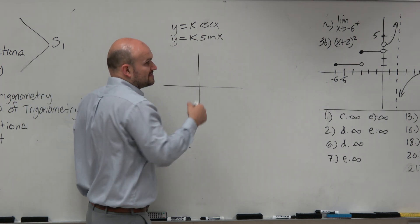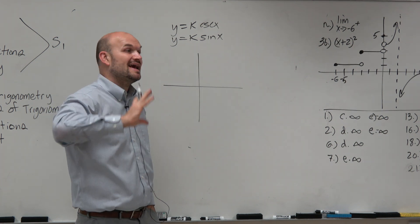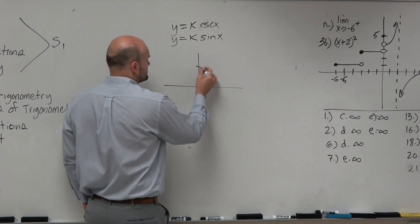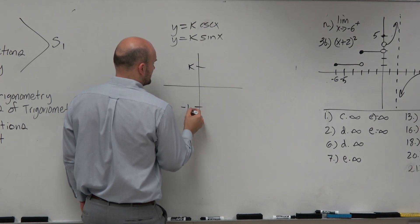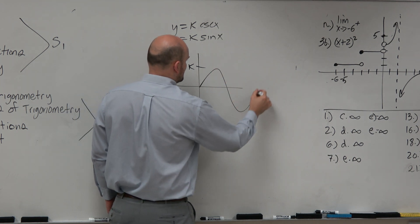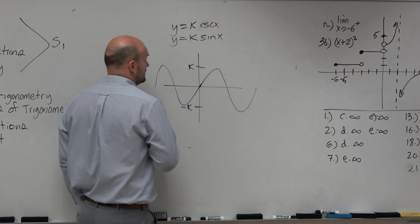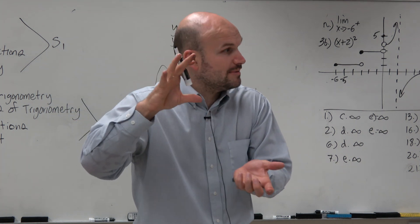Now, we know k represents the amplitude, right? So that's how high and how low, or the half distance from the max to the min. So let's say here's k, here's negative k. So if I was to graph sine, it looks something like that. It only goes as high as k and down as k because there's no other transformations.